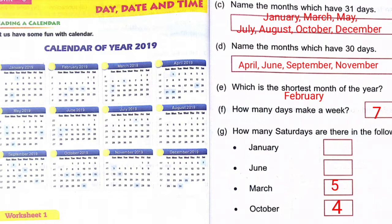(g) How many Sundays are there in the following months? The months given are January, June, March, and October. Write down the question answer properly without making any mistake and get ready for the next question.